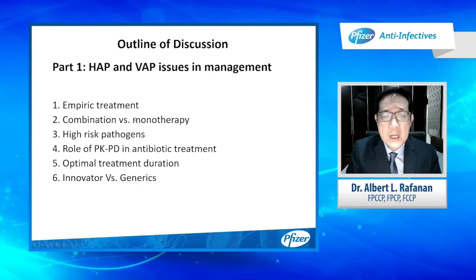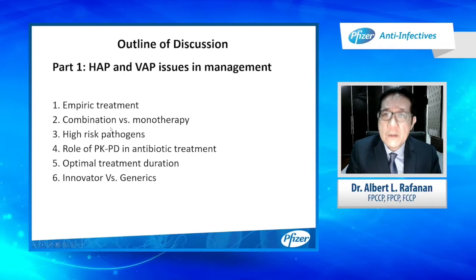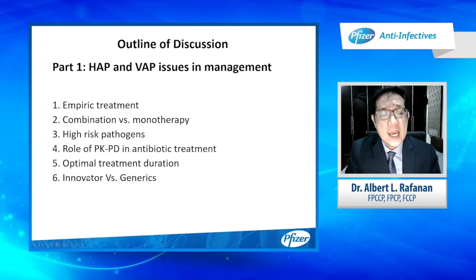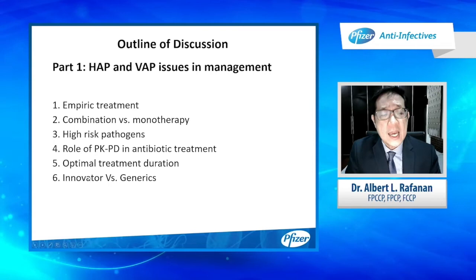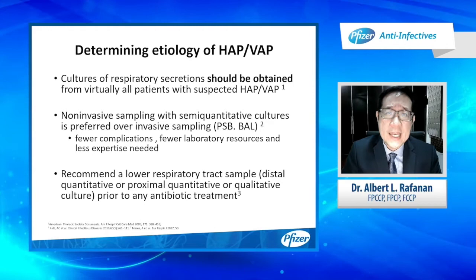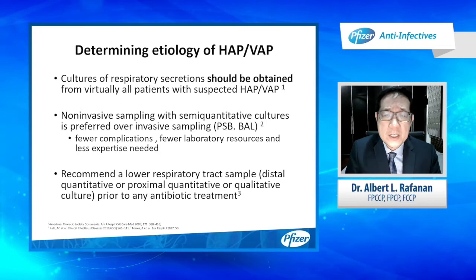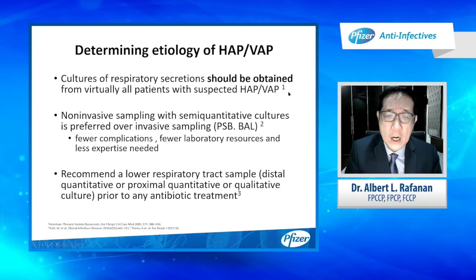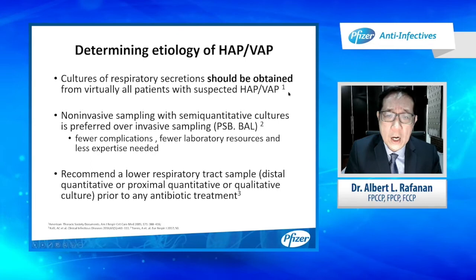How should we treat these patients? To aid our discussion, we'll look into six points: empiric treatment and how to give it, combination versus monotherapy, high-risk pathogens and the role of PK/PD in antibiotic treatment, optimal treatment duration, and innovator versus generic drugs. It is recommended that all patients suspected of having HAP or VAP should have respiratory secretions obtained before any antibiotics are given, to better define the etiology and enable de-escalation of treatment.